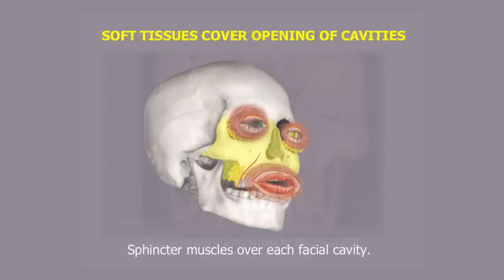The soft tissues of the face provide a soft tissue shutter over the entrance to each of these cavities. These mobile sphincteric shutters provide further protection of the contents, especially the eyelids and the lips, which is where so much of our surgical energy is focused. The bony rim around each cavity provides attachment for the muscles and for the ligaments of the face, which are primarily to do with the coverings over the cavities.